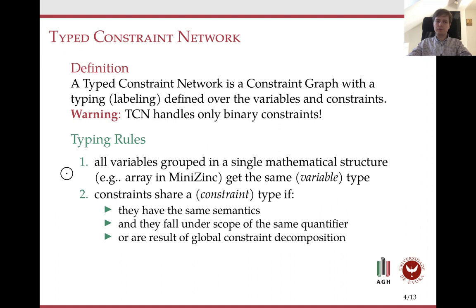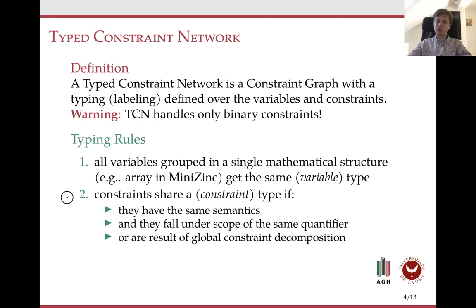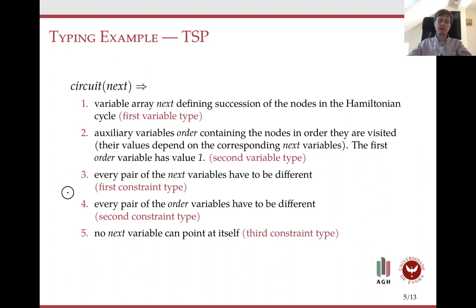The idea is to group variables based on the structures they appear in. For example, if variables appear in the same array in MiniZinc, they will get the same variable type. Similarly, if constraints have the same semantics and fall under the scope of the same quantifier or result from the composition of a single global constraint, they can share the same constraint type. For example, if we add types to the traveling salesman problem, we would decompose the global constraint circuit, leading to two variable types and three constraint types.